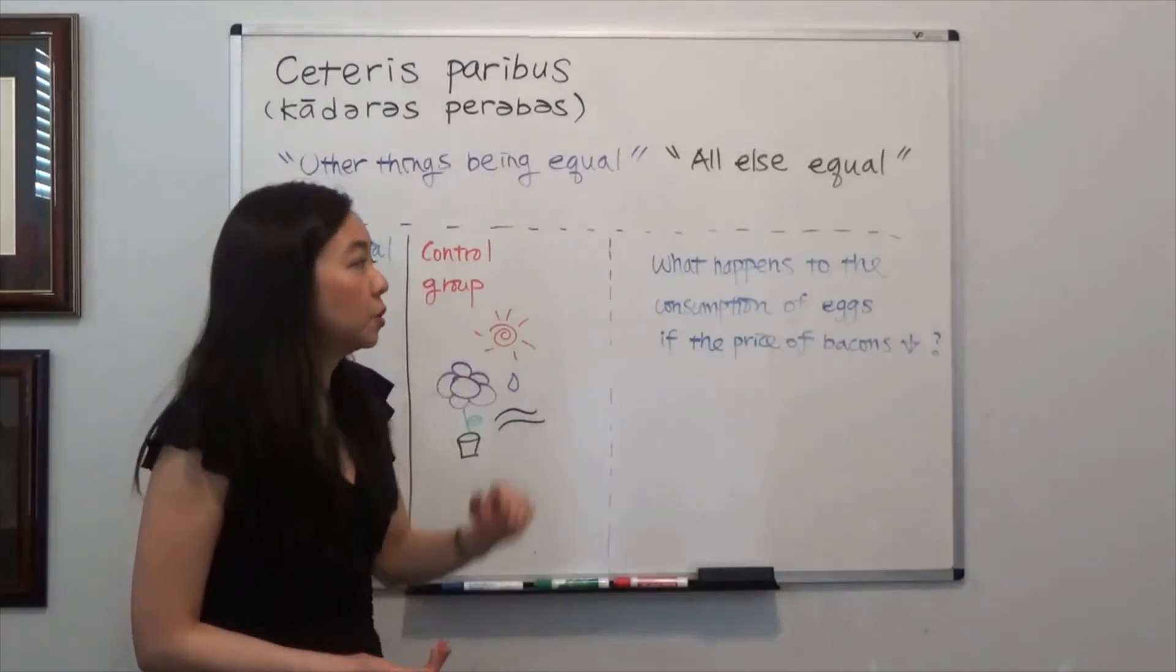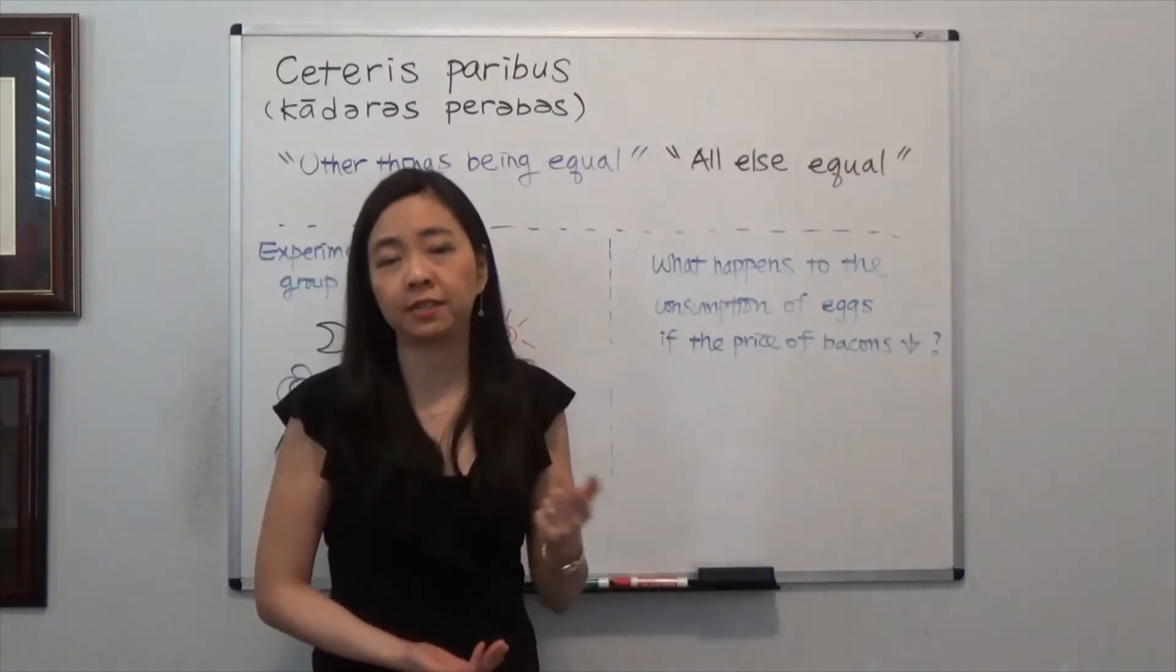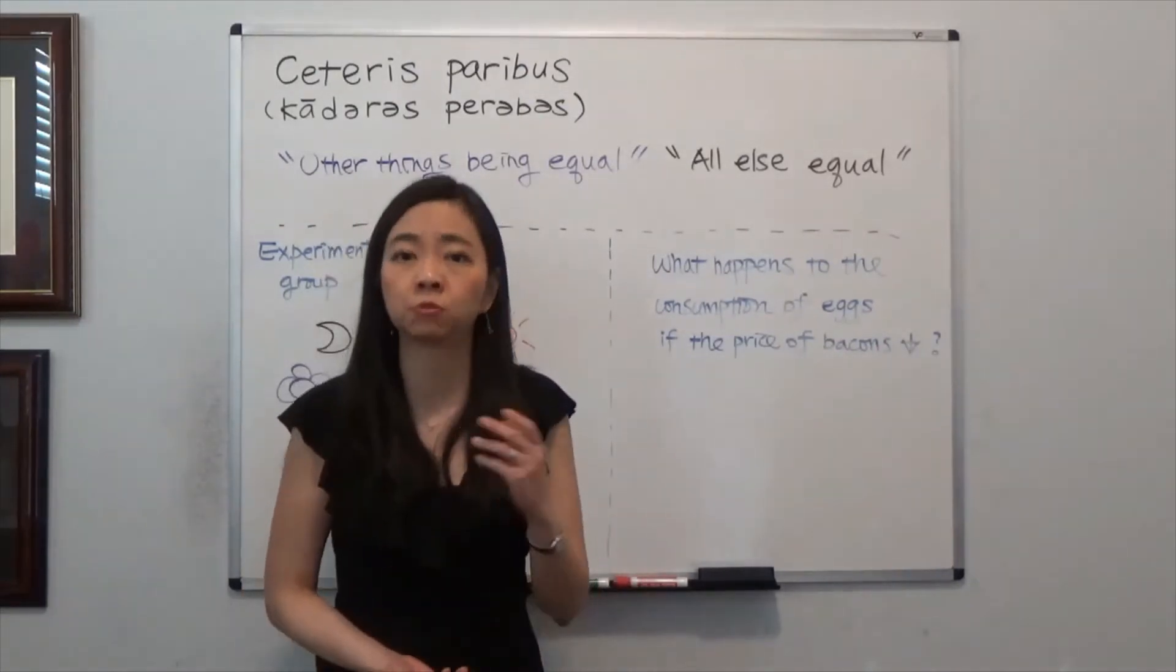So at this time, you must assume that everything else remains the same. For example, the income of the consumer must remain the same. The taste of the consumer must remain the same.